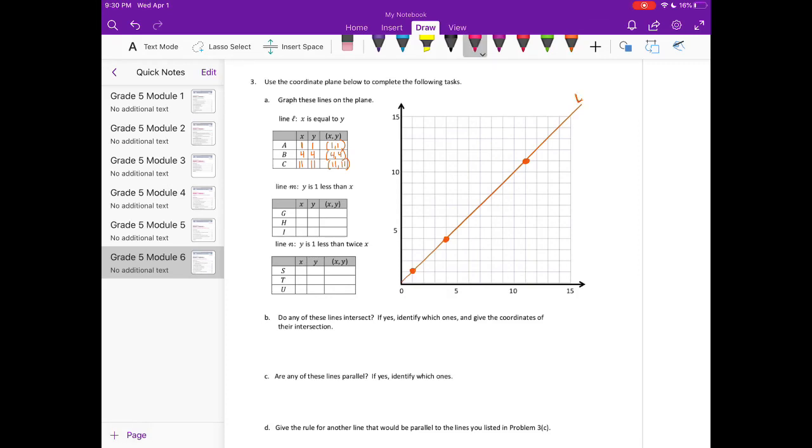I'll choose a new color for line M. Y is 1 less than x, so if x is 1, y is 1 less, so we're doing minus 1. If x is 7, y would be 6. And if x is 14, y would be 13. So we have 1, 0, 7, 6, and 14, 13.